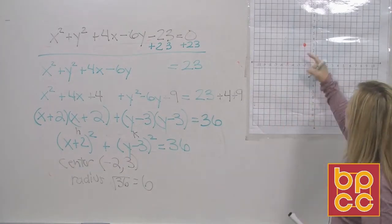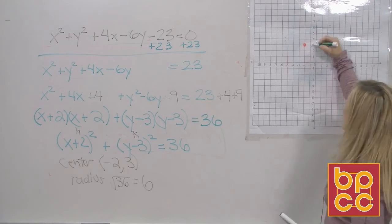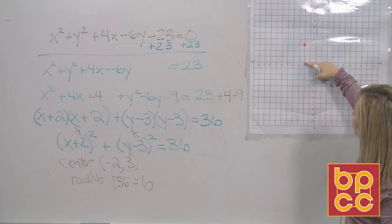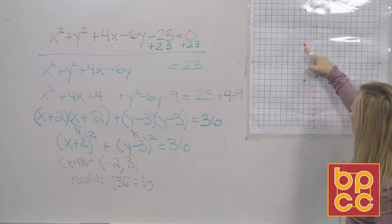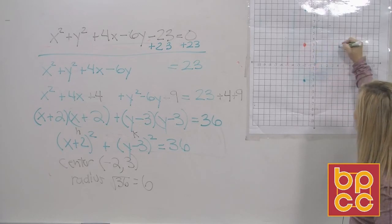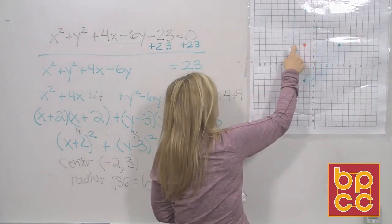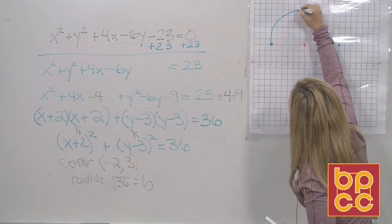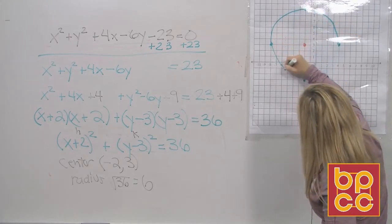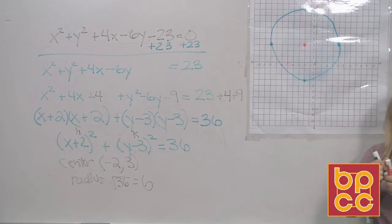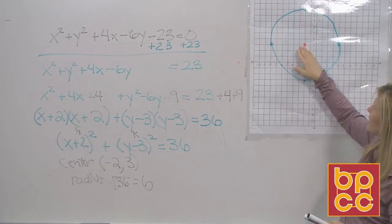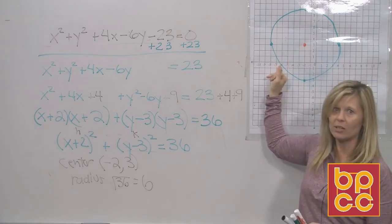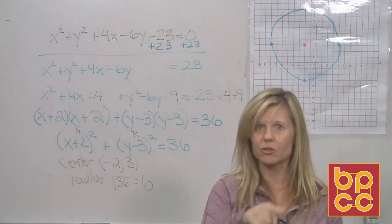From the center at (−2, 3), count like a compass rose: up 6, down 6, right 6, and left 6, marking a point at each. Then freehand a circle that passes through all four points. Those four points are called the vertices — every circle has a center and four vertices. Every speck of ink is a point; you only need to plot four to make the circle.